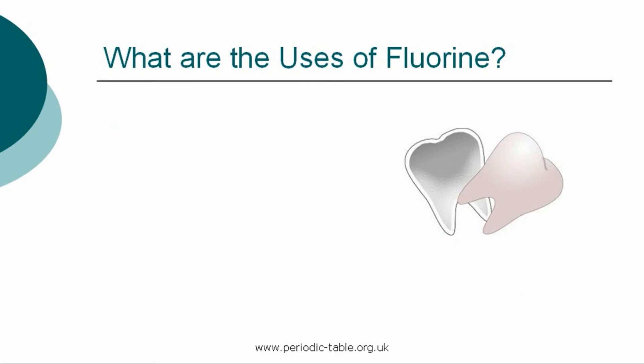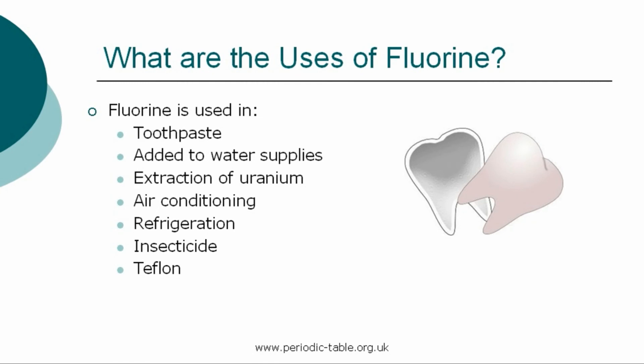Once the properties of an element have been established, we then have the ability to identify how it can be used. Soluble fluorides added to public water supplies have reduced the incidence of tooth decay. It is also used in toothpaste. Other uses of fluorine include the extraction of uranium, in air conditioning and refrigeration, and also as an insecticide. Fluorocarbons such as Teflon have found extensive use as lubricants because of their low friction.